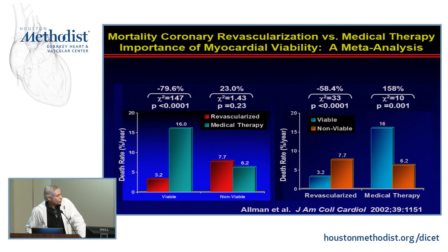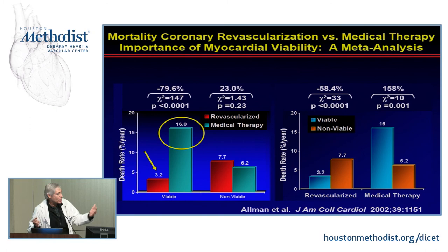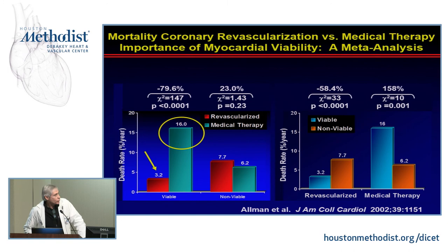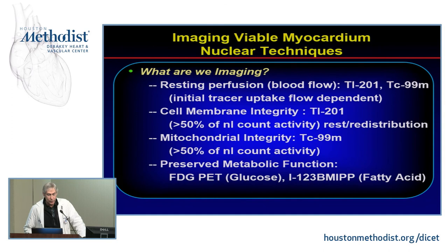Looking at overall outcome — data from Allman and colleagues using both nuclear and echo data — if you have viable myocardium and get revascularized, you do much better than with medical therapy alone. Granted, the intensity of medical therapy was perhaps lower in that older study, but the pattern is clear: if you're viable, better blood flow via revascularization improves outcomes. Conversely, if non-viable, bypass surgery does not appear to significantly affect mortality.